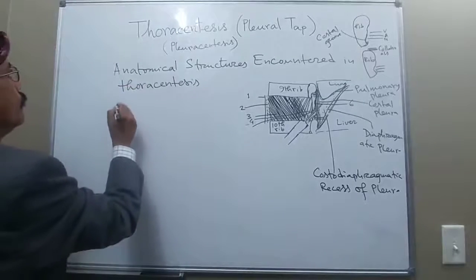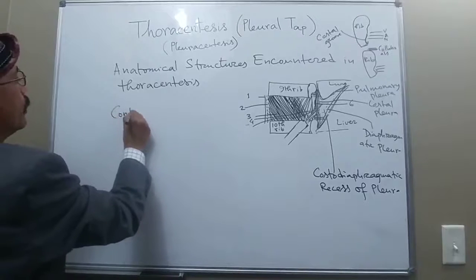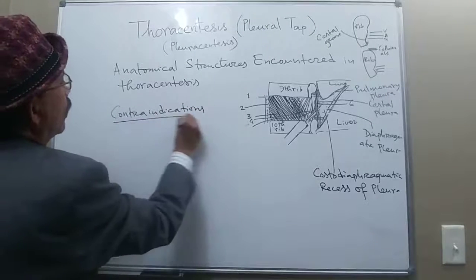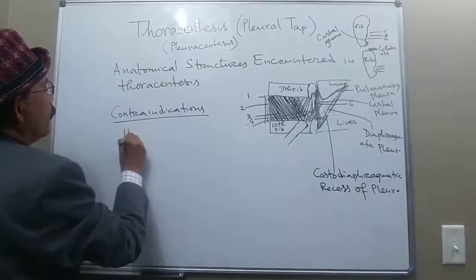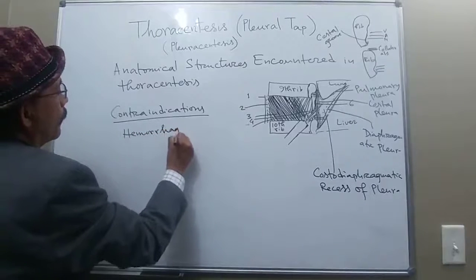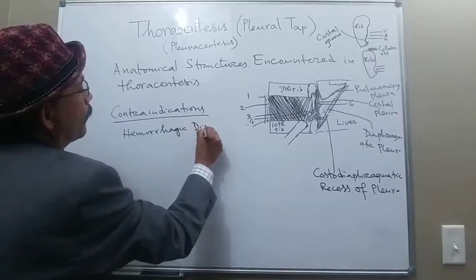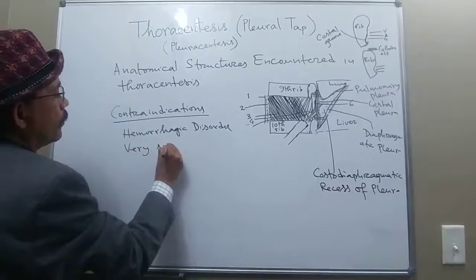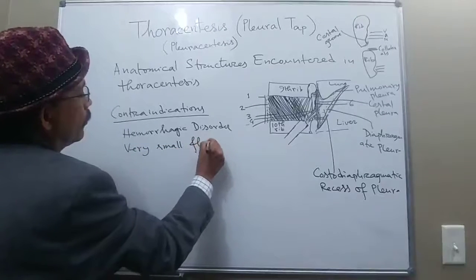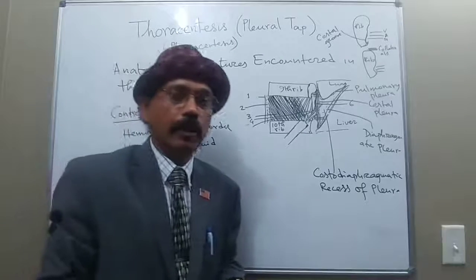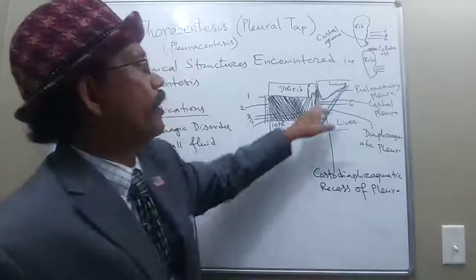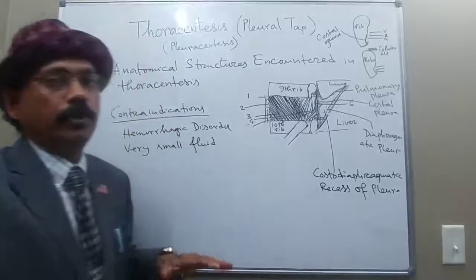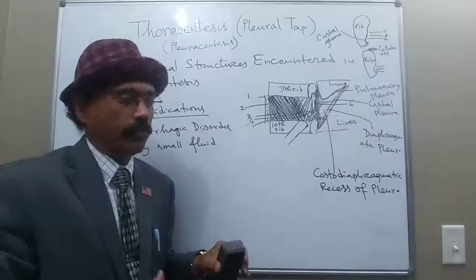Contraindications to thoracentesis include hemorrhagic or bleeding disorders and very small fluid collections. The procedure should be performed under ultrasonic guidance so that you do not miss the target or damage the lung or liver.